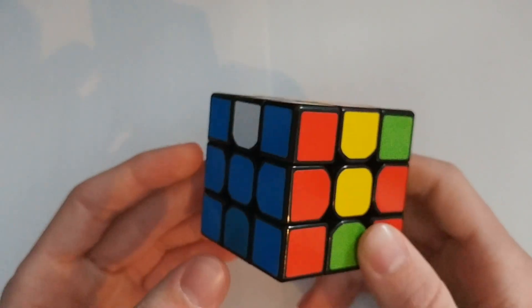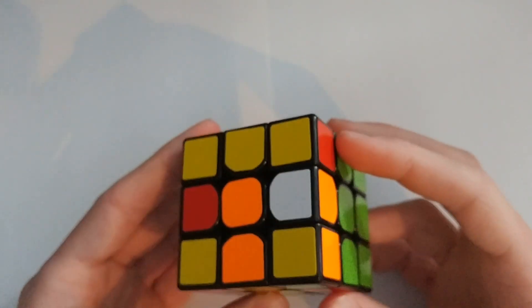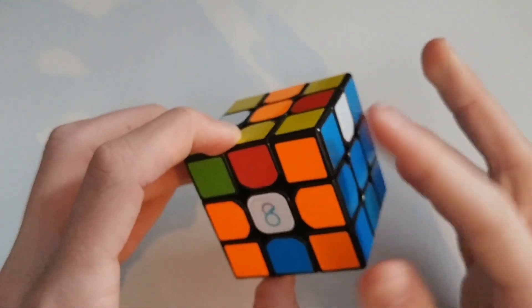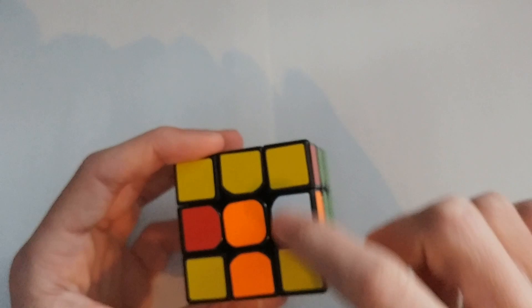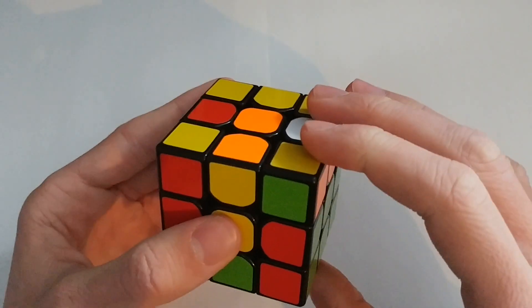So the other orientation case you can get is where I look, I see correct, correct, and correct, incorrect. So I have to swap these two. So it goes like this.